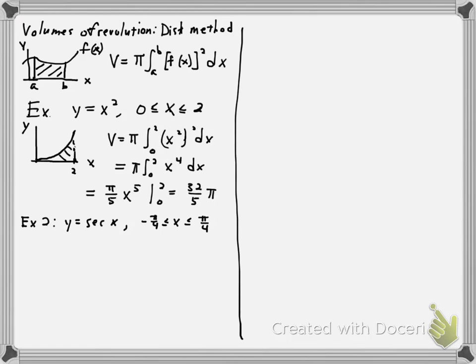As a second example of computing a volume of revolution using this method, consider the function y equals secant x for x between minus pi over 4 and pi over 4. We'll plot the function. Secant is the reciprocal of cosine, and it looks like the following. If we have our y and x-axis, there are vertical asymptotes at minus pi over 2 and pi over 2.